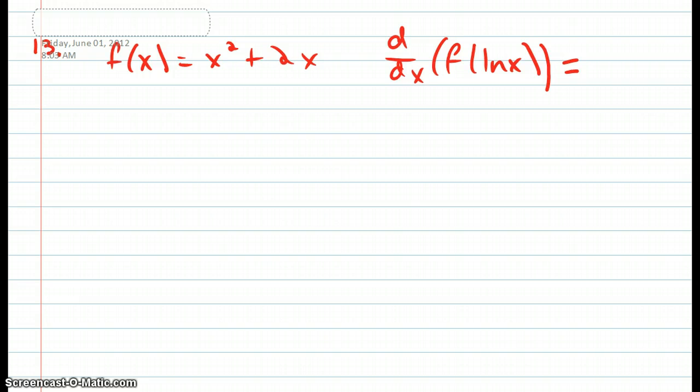Okay, so for number 13, this is the information we're given, and we're trying to find the derivative of f of ln of x, and so this problem also uses the chain rule, just like number 12. And so if you're taking the derivative of that, it'll end up being the derivative of, it'll be f prime of ln of x times the derivative of ln of x, which is 1 over x.